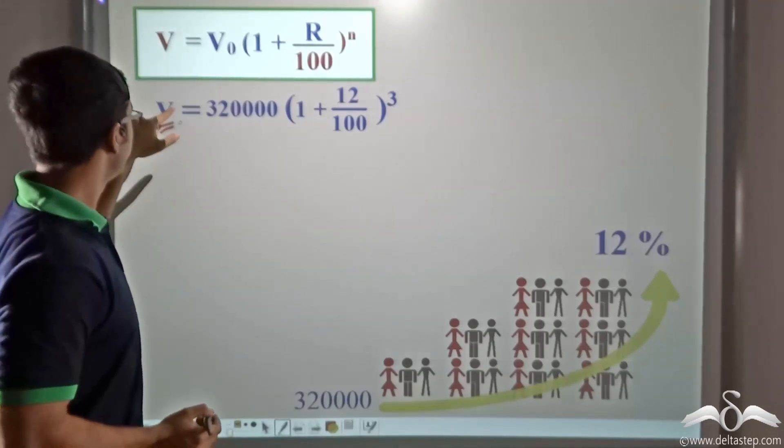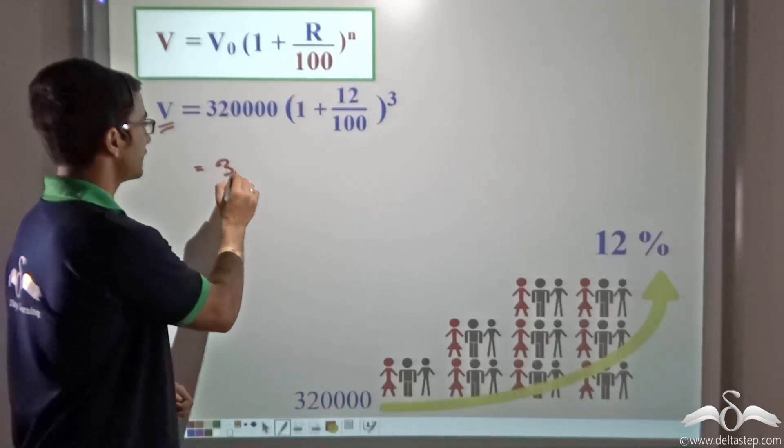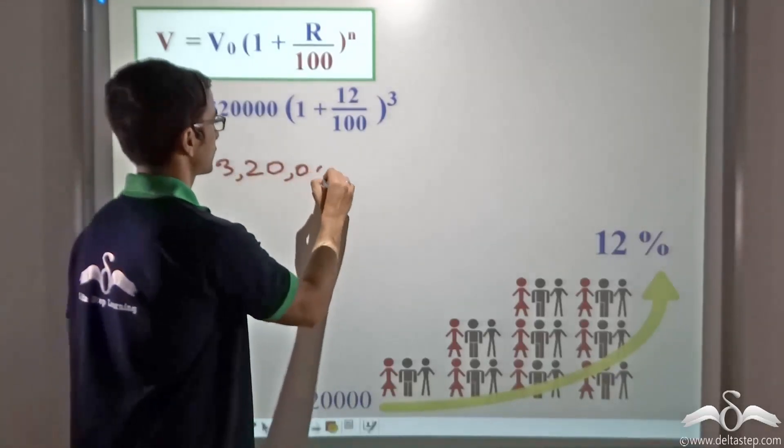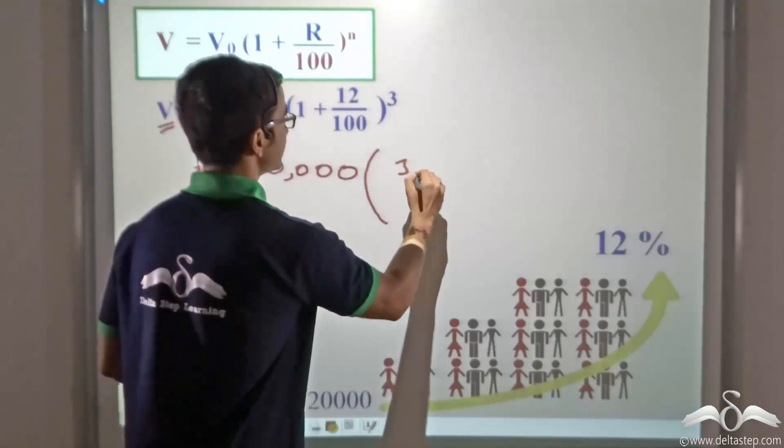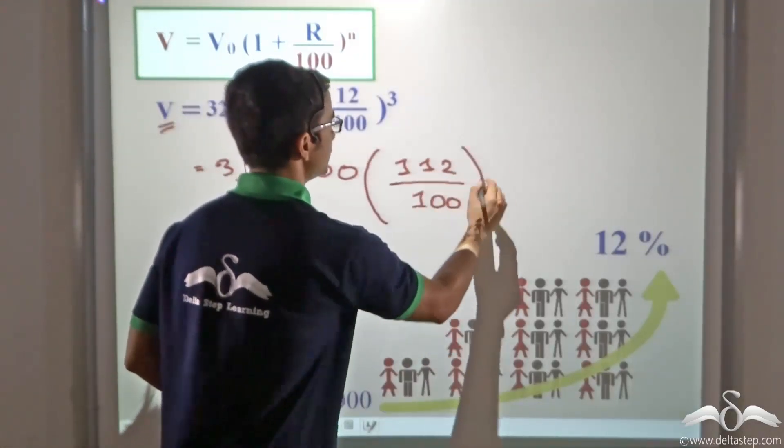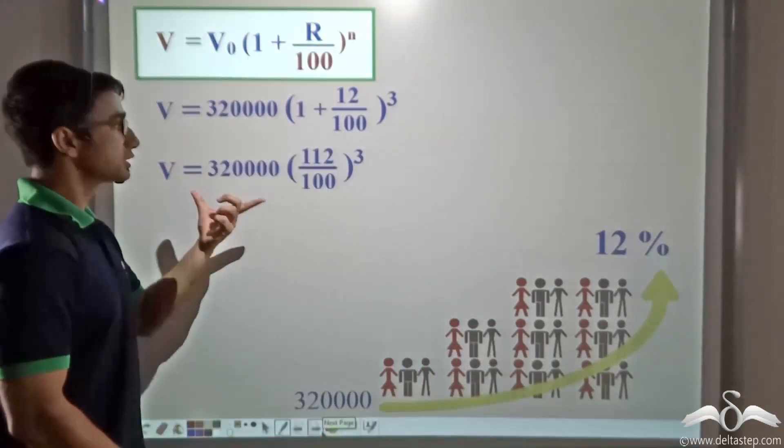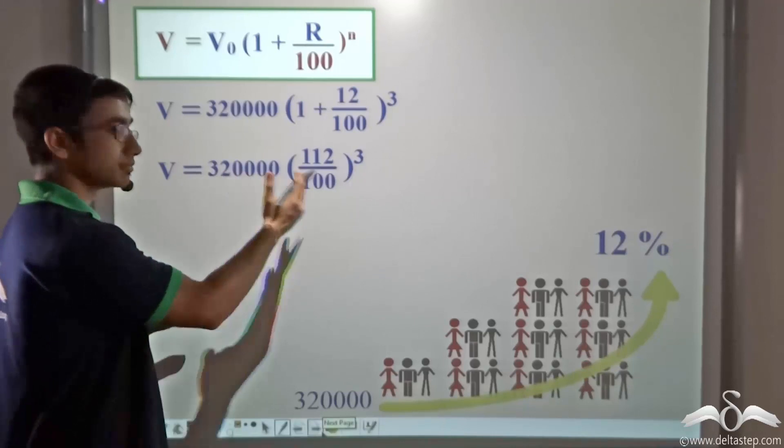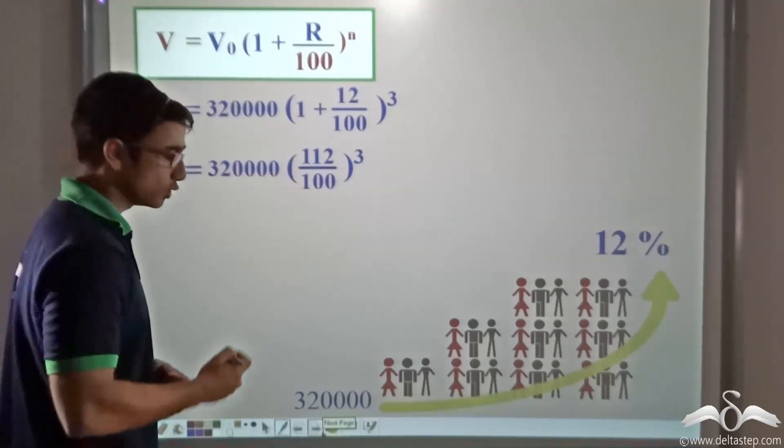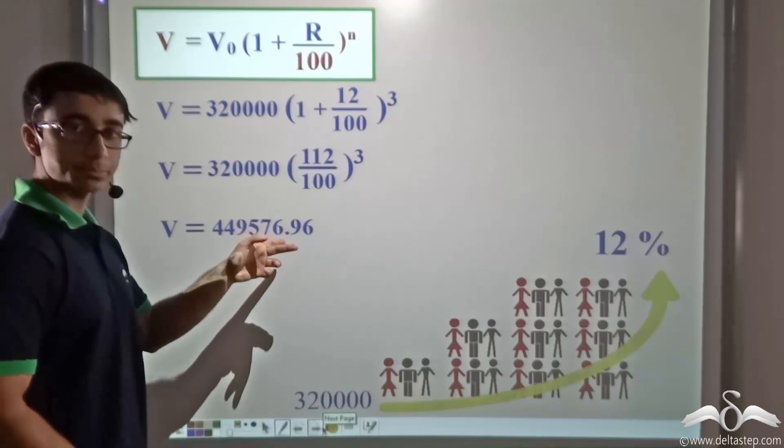So let's see what happens when I simplify this equation. On simplifying this I get 112 divided by 100 to the power of 3. So this particular equation on further simplification is going to yield a value of 4,49,576.96.